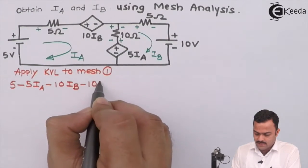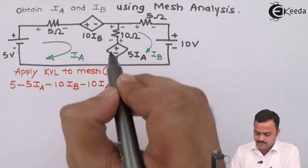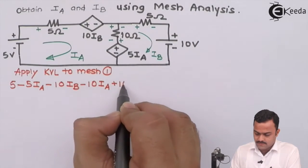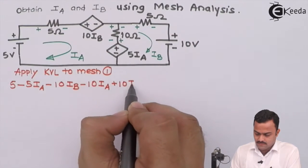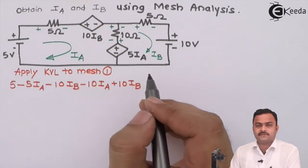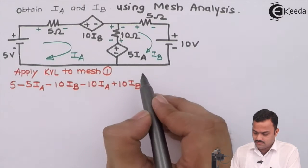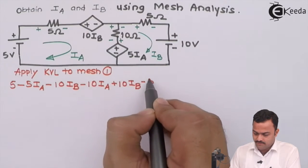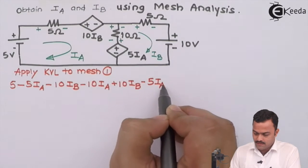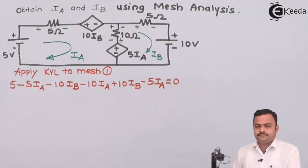Continuing: minus 10·Ia, then minus-plus gives plus 10·Ib. Then a voltage source: minus 5·Ia. Setting the full KVL expression equal to zero.